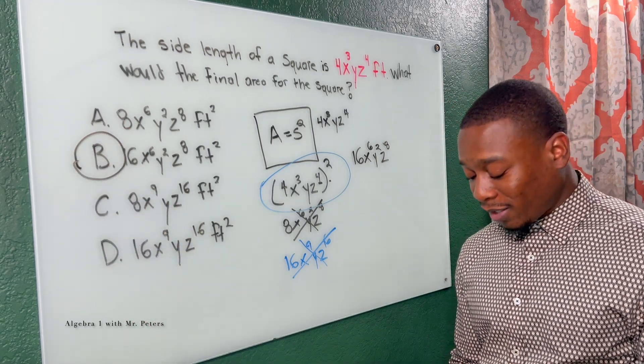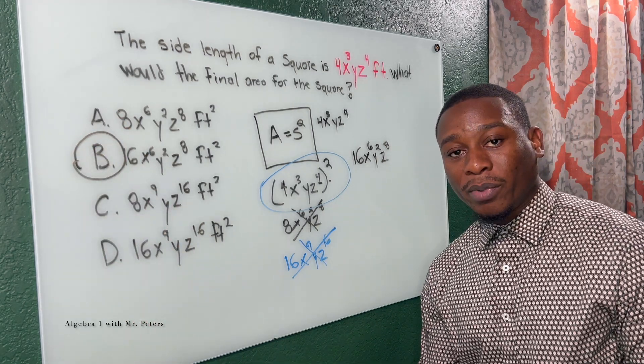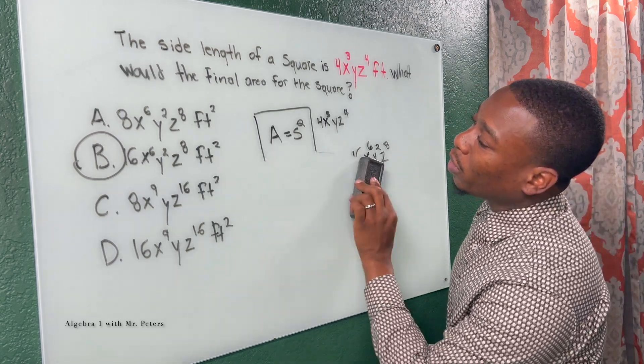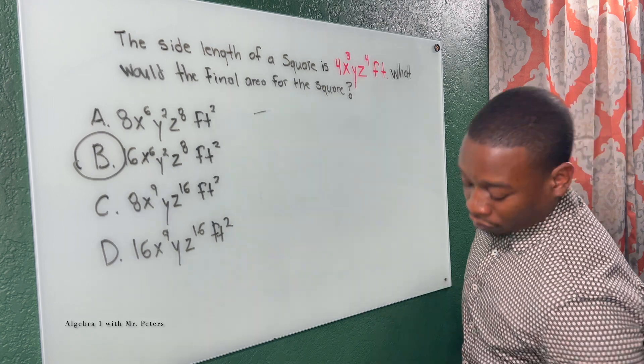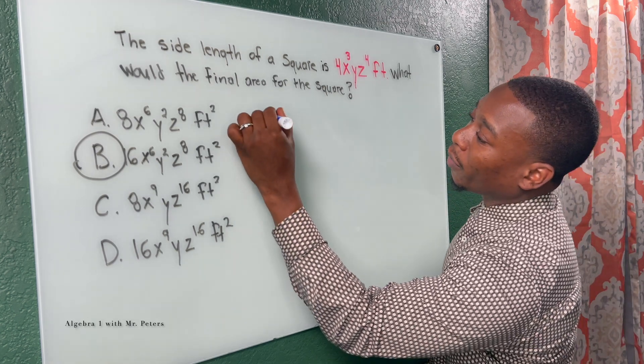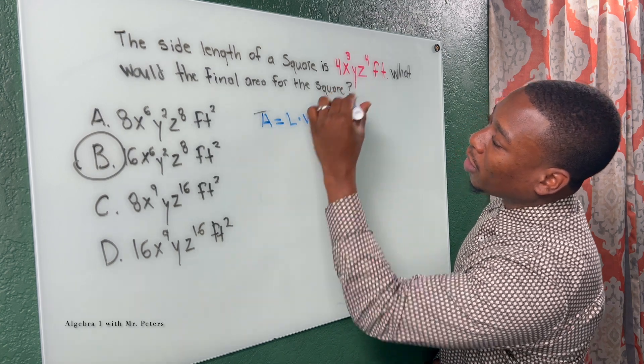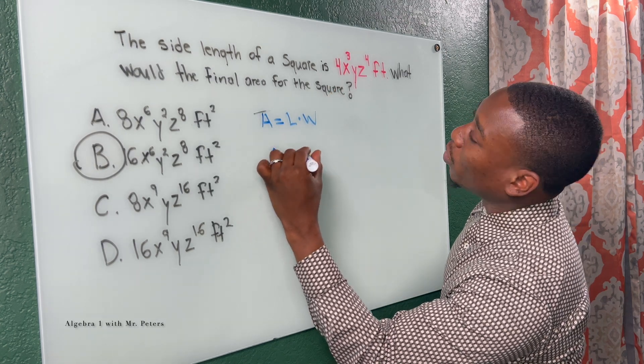Now let's say we did not remember this or we didn't use this way to solve it. What's another way we could do this? Well, we know that area is normally equal to length times width. So let's say we took this. Area is equal to what?